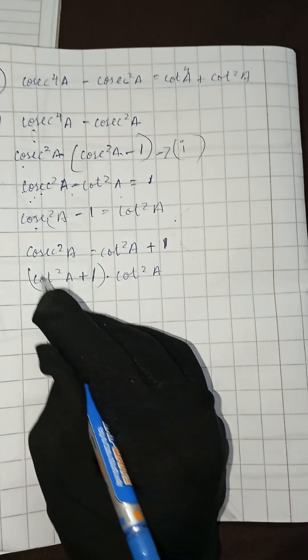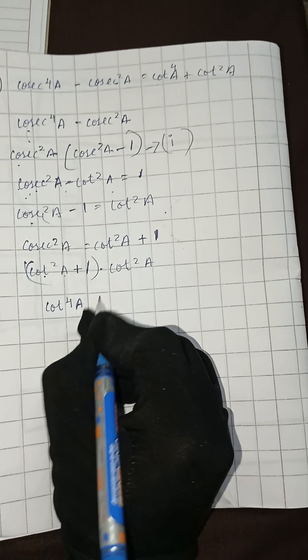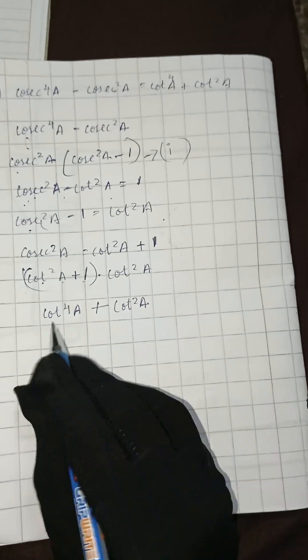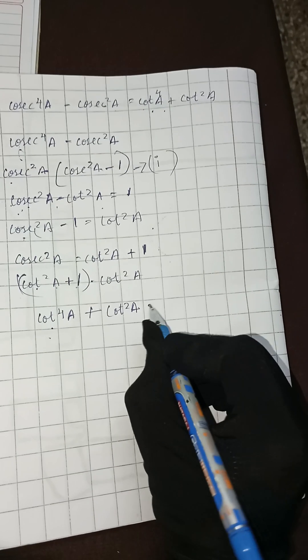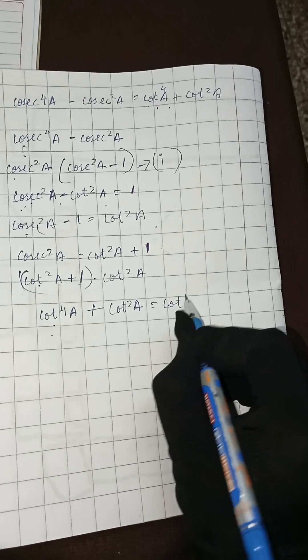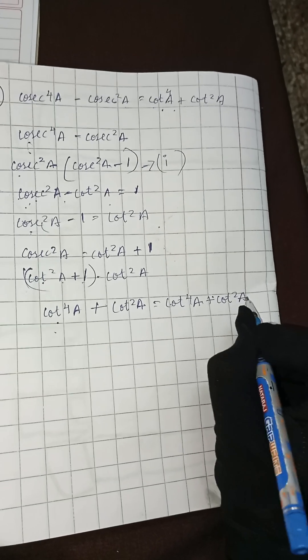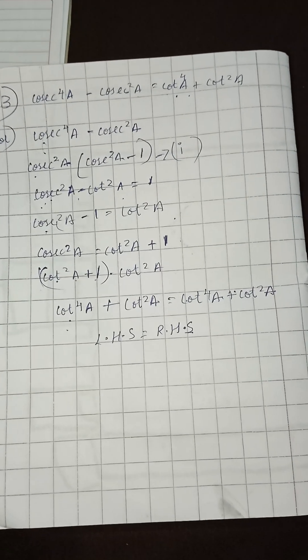Multiplying out: cot squared A times cot squared A gives cot to the power 4A, plus cot squared A times 1 gives cot squared A. So we get cot to the power 4A plus cot to the power 2A, which equals the RHS. Therefore LHS equals RHS, hence proved. That's all for today — if you found it helpful, please subscribe, like, and share. Thank you for watching.